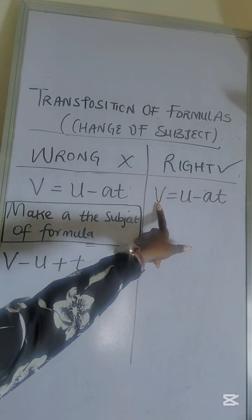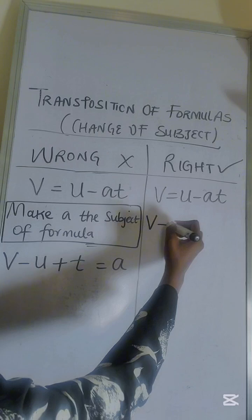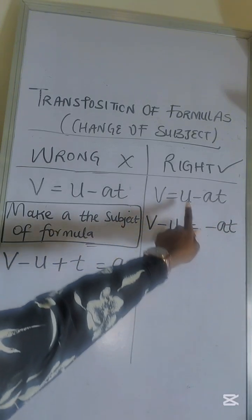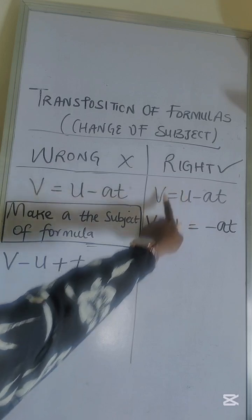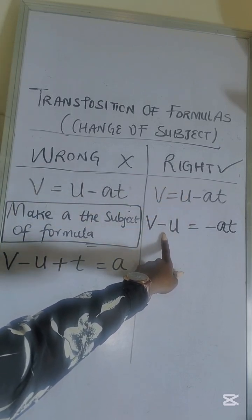We have v minus u equals to what is left. Remember that the positive sign would change to the inverse, which is the negative sign, whenever crossing the equal sign.